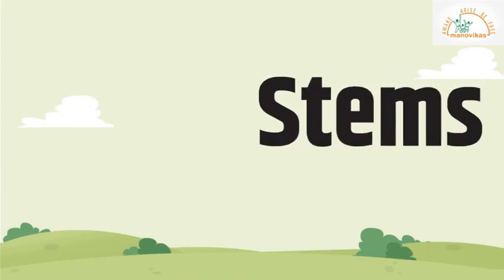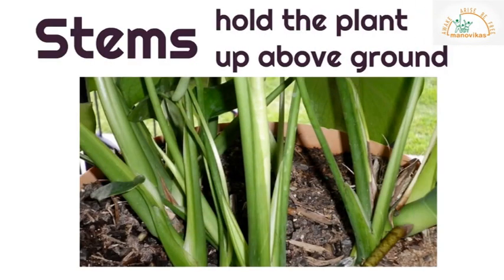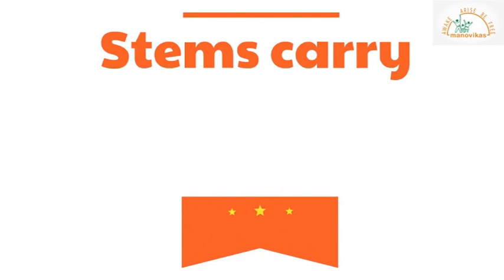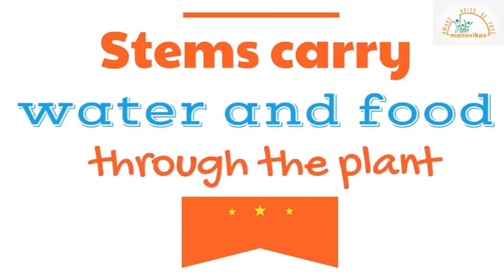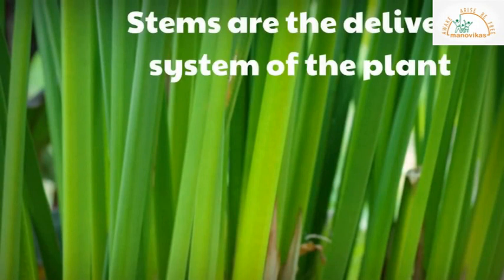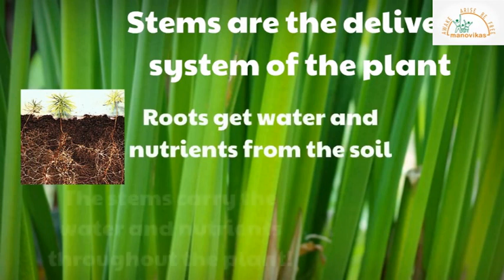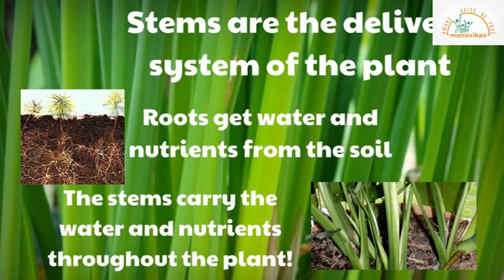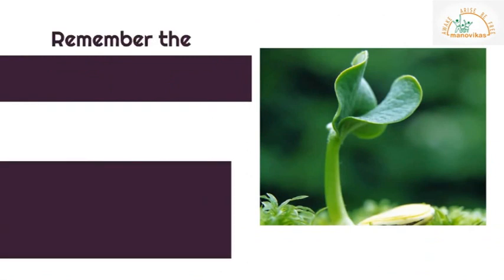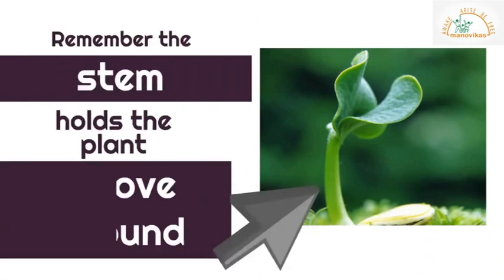Now we are going to look at the second part — the stems. The stems hold the plant above the ground. The stem carries water and food through the plant. Stems are the delivery system of the plant. Roots get water and nutrients from the soil, and the stems carry the water and nutrients throughout the plant.